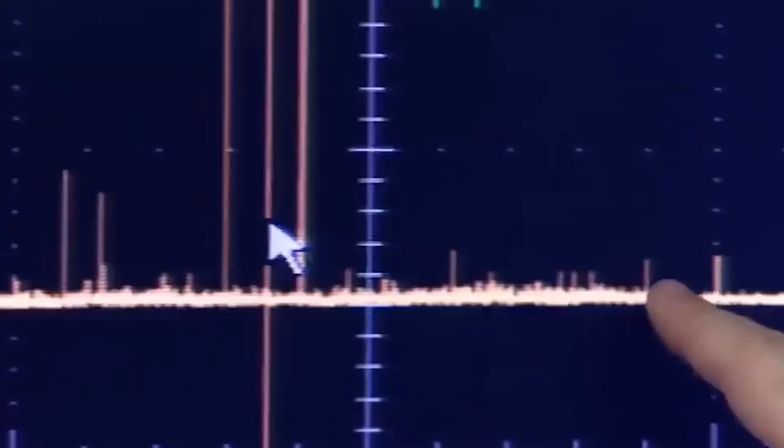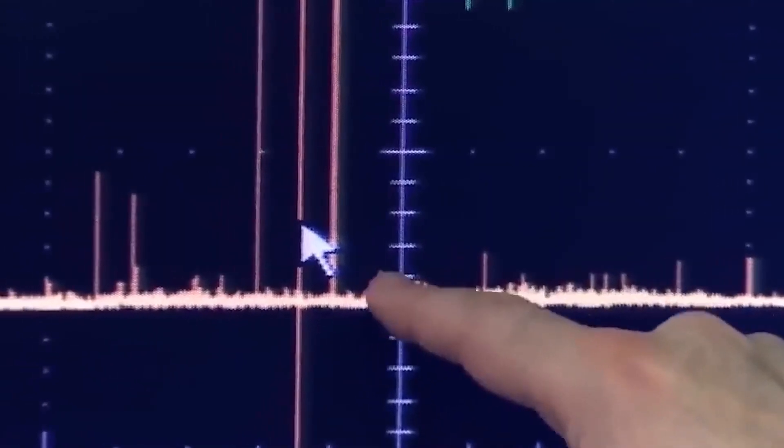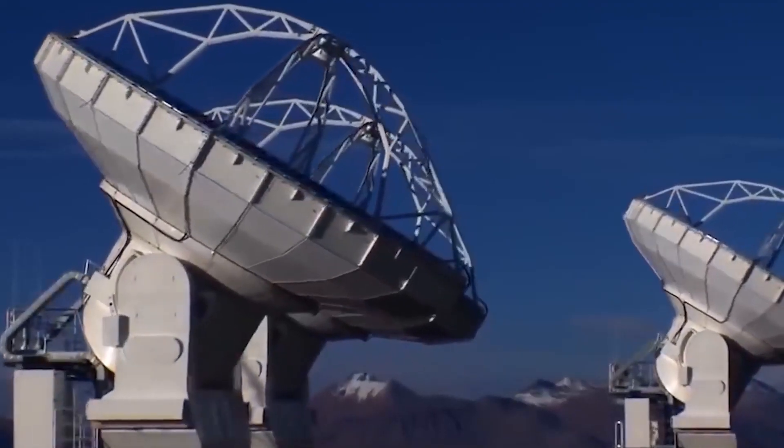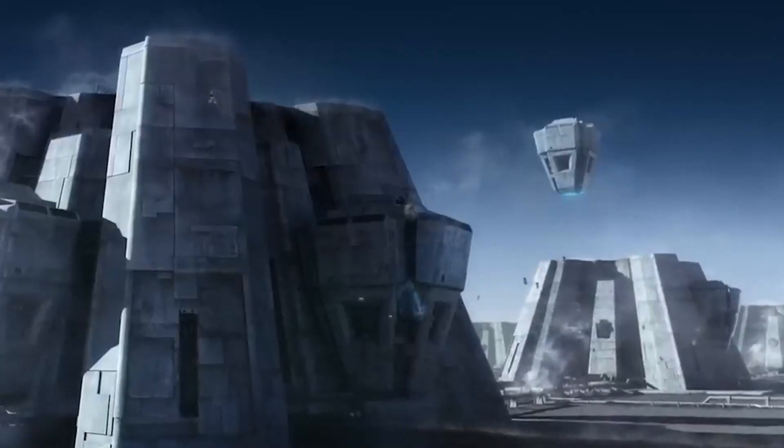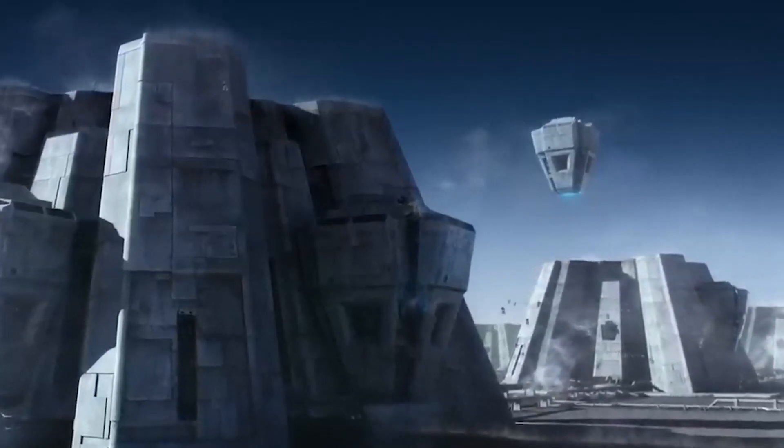Mind you, the probability of Proxima b housing life or not largely depends on whether an atmosphere exists or not. Although Proxima b is in a habitable zone of its star, its location to the sun hampers the existence of life.